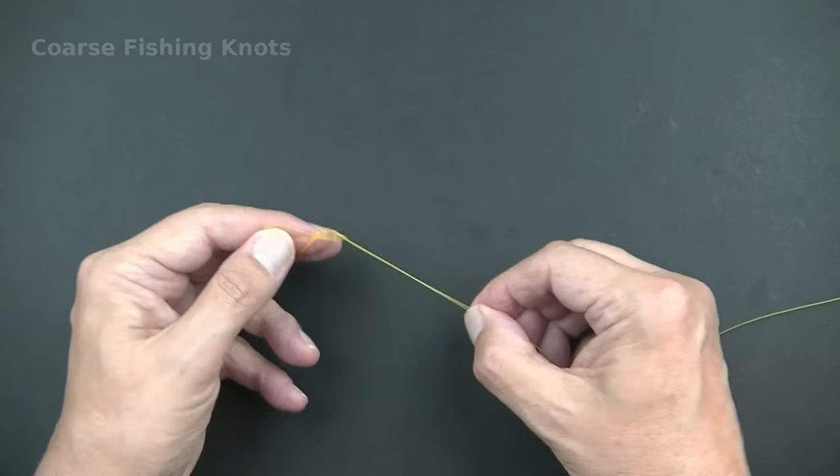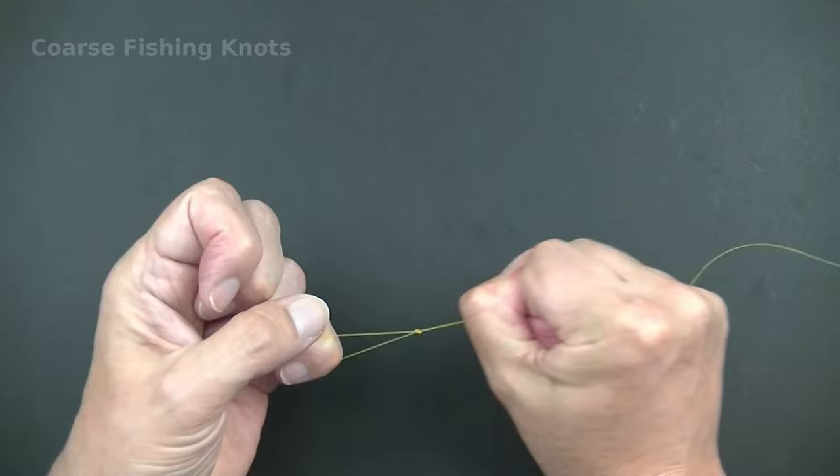Loops can be used to hitch swivels, snap links and any other terminal tackle with an eye. It can also be used to loop two lines together.